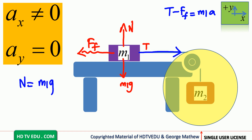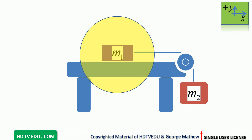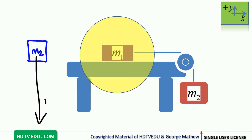For mass m2, we close mass m1 and isolate mass m2. Tension acts vertically up and gravitational force acts vertically down. The gravitational force is greater because m2 is accelerating downward — since m1 is accelerating to the right, m2 must accelerate down.